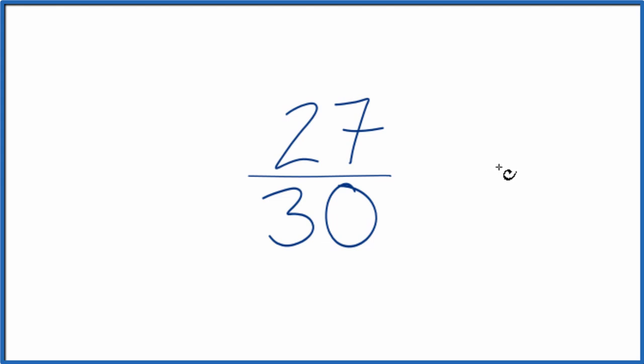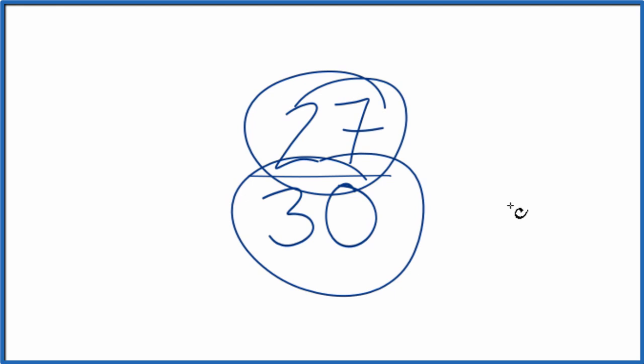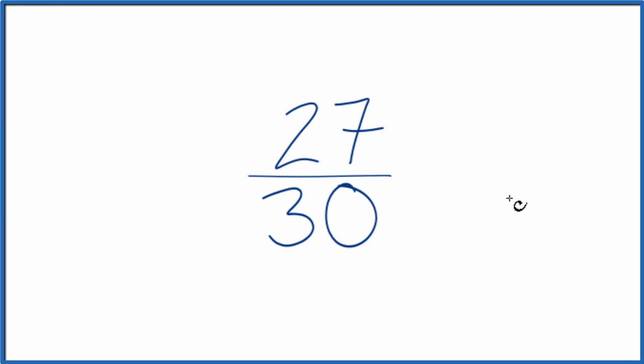To do that, we need to find a common factor, something that goes into 27 and 30. And we're looking for the greatest common factor.